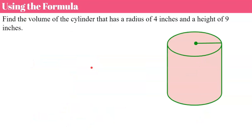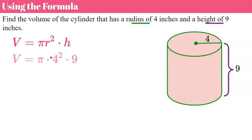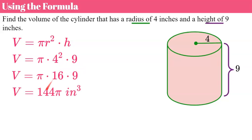Now let's talk about how to use the formula. We're asked to find the volume of a cylinder with a radius of 4 inches and a height of 9 inches. Our radius is 4 and our height is 9. We write down our formula and plug in what we know: pi times r squared times h. Our radius is 4, so r squared becomes 4 squared, and our height is 9. So we have pi times 4 squared times 9. 4 squared is 16, and 16 times 9 is 144. So we have 144 pi cubic inches.